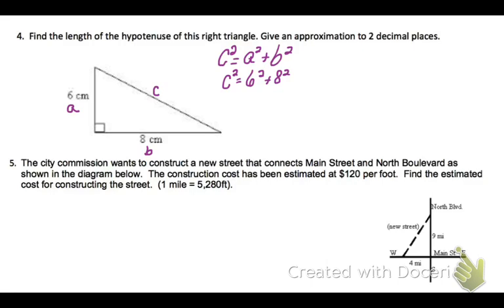So, c squared equals 6 squared plus 8 squared. And then I'm going to solve that. And I get that c squared equals 100. Well, I don't want c squared. I want c. So, I'm going to take the square root of both sides. And I get that c is 10 centimeters.